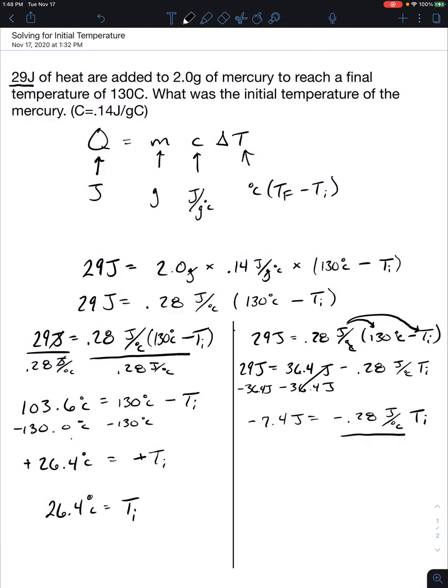You're going to divide out by negative 0.28 joules per degrees Celsius. So that is over negative 0.28. It looks like once you do that division you will get a positive because it's negative divided by a negative 26.4 degrees Celsius. So you can cancel out the units of joules and you're left with Ti.